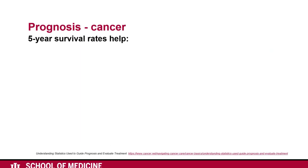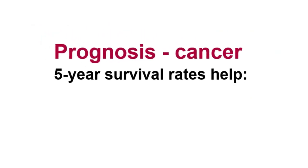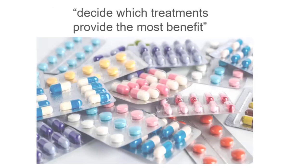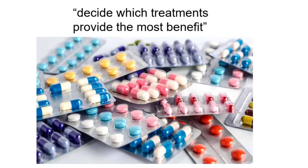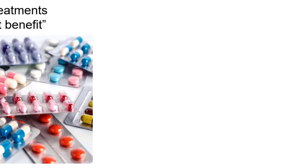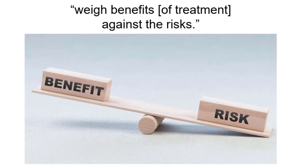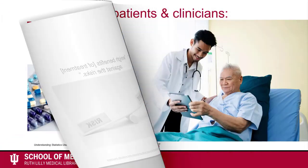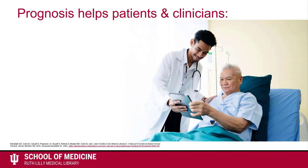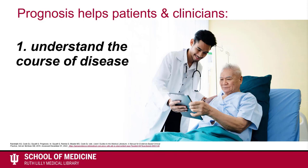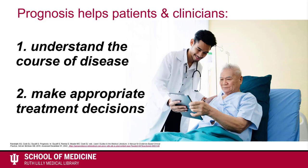This might mean deciding to pursue treatment or deciding not to pursue treatment. For instance, if the prognosis is cancer, five-year survival rates could help clinicians decide which treatments provide the most benefit and weigh the benefits of treatment against the risks of treatment. In sum, prognosis helps patients and clinicians understand the course of disease and make appropriate treatment decisions.